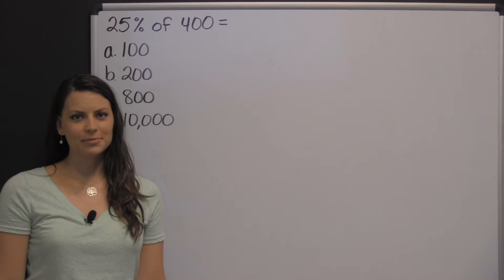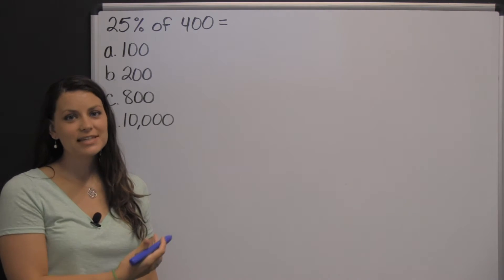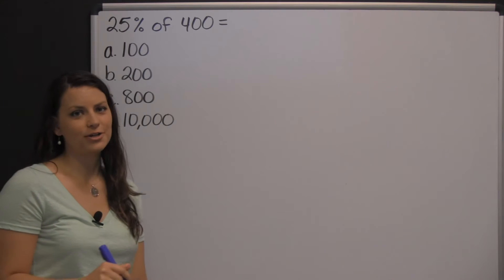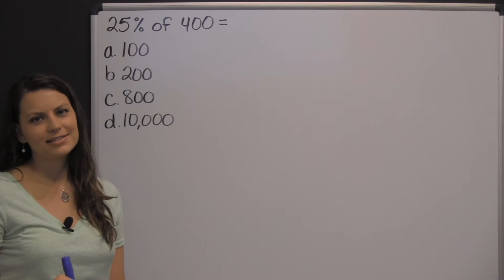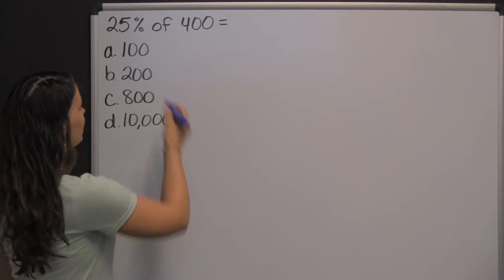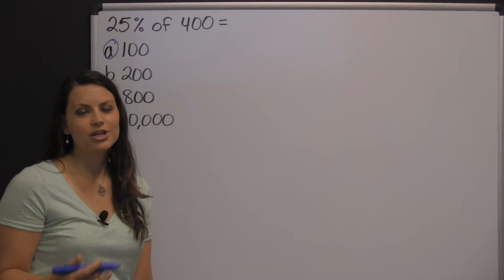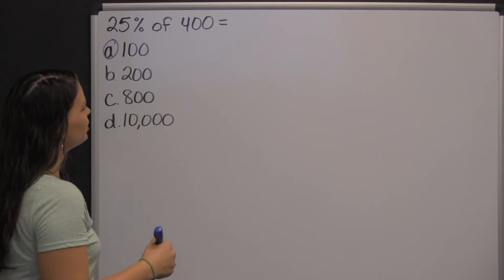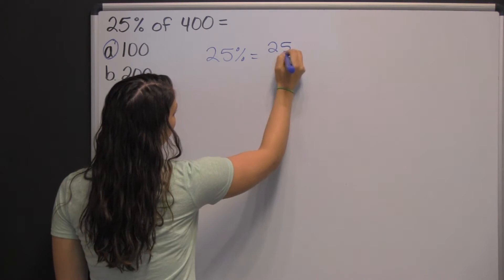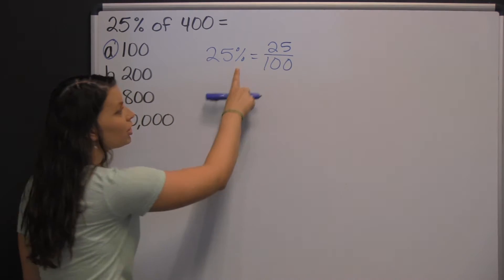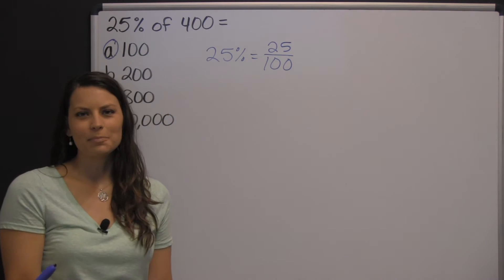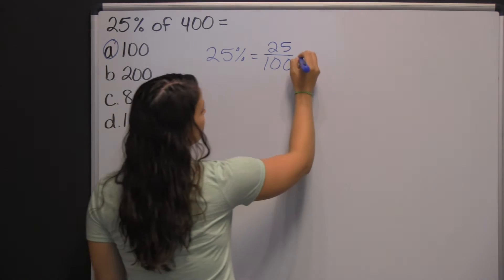You will need to know how to work percent problems for the HESI A2. Here's an example of a percent problem you could see when you take the HESI: twenty-five percent of four hundred. There are a couple ways you can look at this. One is that twenty-five percent is just a fourth, so what's a fourth of four hundred? One hundred. You could also change your percent into a fraction or into a decimal. Twenty-five percent as a fraction is twenty-five hundredths, because percent literally means per or divided by one hundred — that's the cent part — which you could simplify to one-fourth.